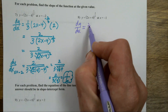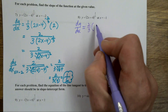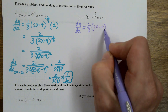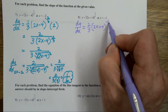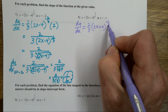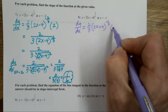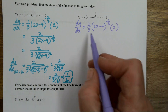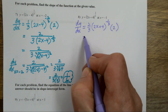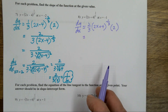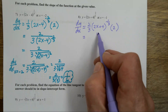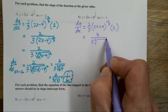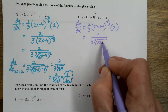Two thirds times... lower the power by one, then the derivative of the inside. Again, when I clean this up, I have four over three times the cube root of 2x plus 4.